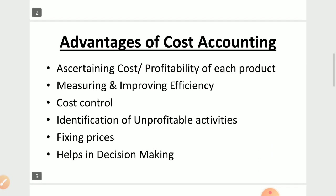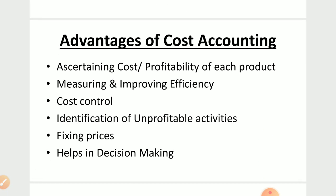The first advantage of cost accounting is ascertaining cost and profitability of each product. Whenever a company manufactures a product, it does so to sell it, and to sell it, expenses have to be incurred. So the first advantage is to know how much cost will come, and also how much profit the company will earn after manufacturing.